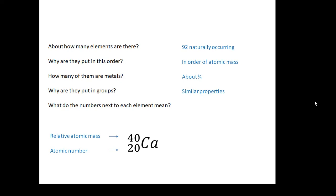What do the numbers next to each element mean? Well, the big number is the relative atomic mass—that's how heavy they are. The small number is the atomic number. It's actually the number of protons, but it's its number in the periodic table, so hydrogen is number one, helium is number two, etc.